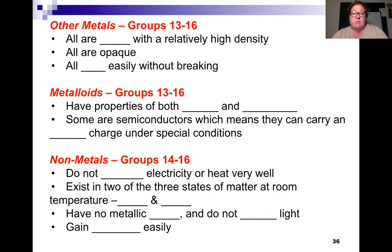The other metals, that were pink, I think, on that periodic table, they are solid, so relatively high density. They are opaque, and they bend easily without breaking. The metalloids are the ones that touch the red stair step, and they have stripes going through the element symbol on the periodic table. And they have properties of both metals and non-metals. Some are semiconductors, which means that they can carry an electric charge under special conditions.